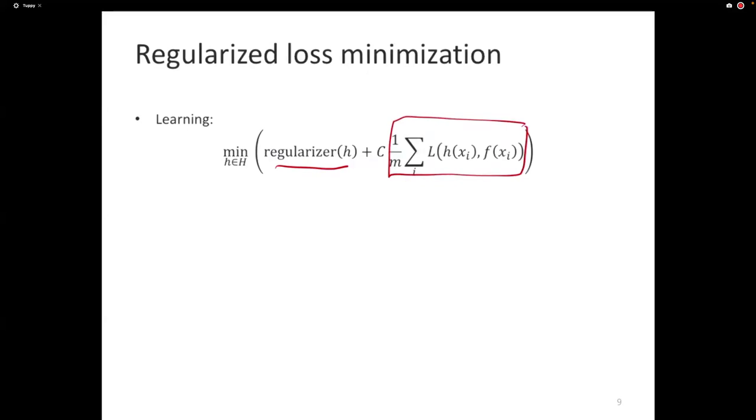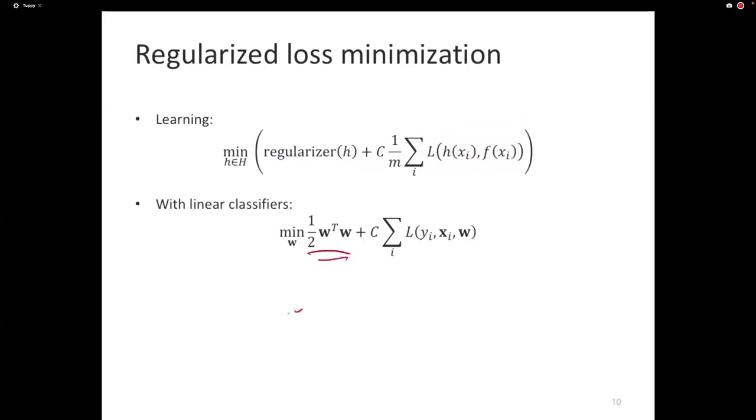With linear classifiers, there are many different regularizers that can exist. A linear classifier is nothing but a weight vector. And the most common regularizer for a linear classifier is this expression that we've seen before, half W transpose W, which is also called the L2 regularizer. Because it's the L2 norm, it's the squared norm. So it's the squared Euclidean distance, length of the vector.